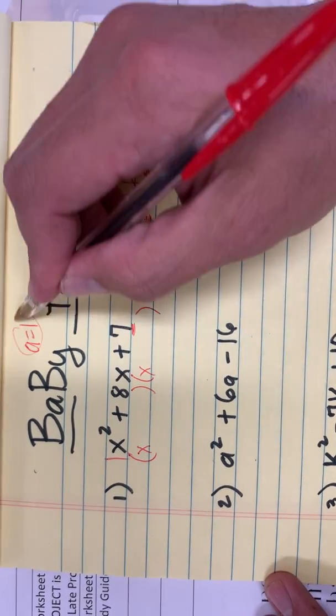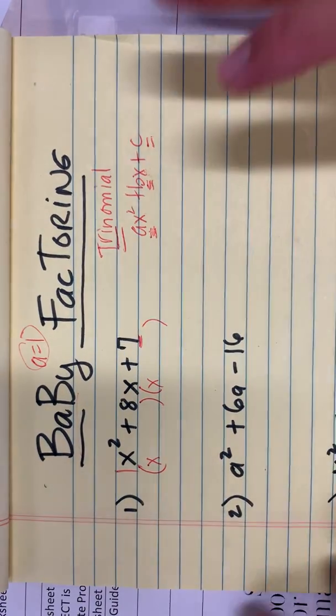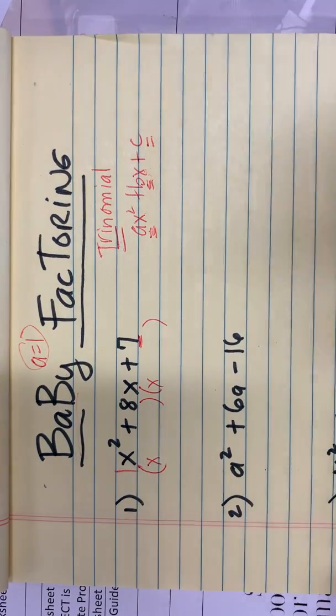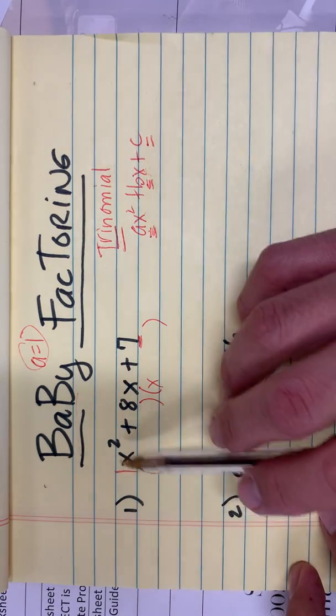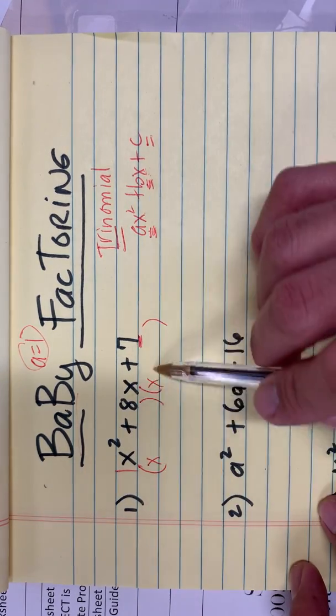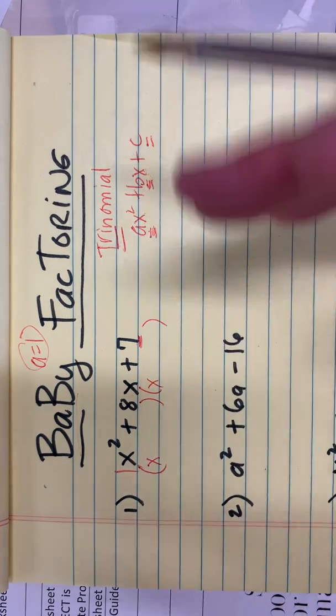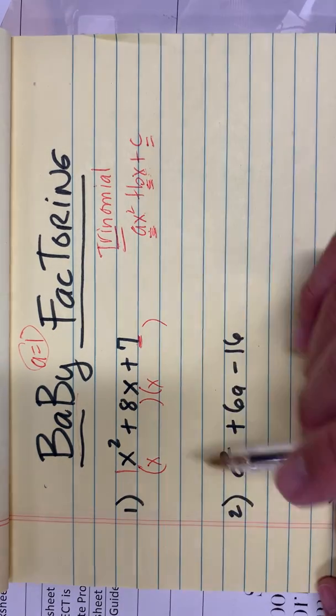When A is equal to 1, that's baby factoring because it's the easy level of factoring trinomials. And some people call it the opposite of FOIL. Trinomial here is the answer when you FOIL binomials, when you multiply binomials.